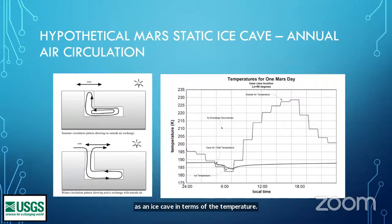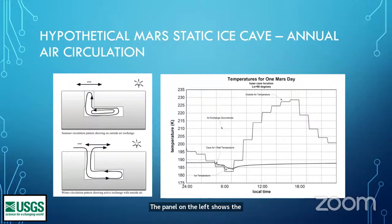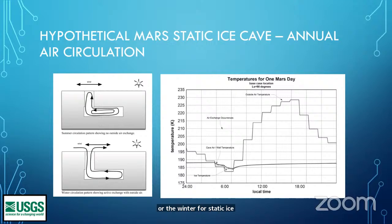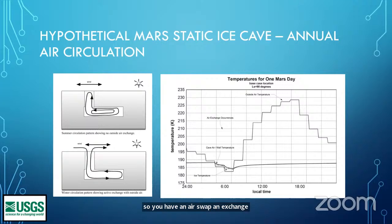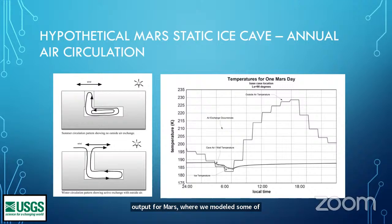Here's an example of what we call a static ice cave. The panel on the left shows the differences in air circulation between the outside and inside of the cave depending on summer or winter. In summer, the outside air is warmer than the slug of air in the cave, so you don't have any air exchanges. In winter, however, you can get very cold air outside — so cold it's even colder than that slug of air in the cave — and so you have an air swap or exchange. The panel on the right shows model output for Mars where we modeled static ice caves, showing that right before the sun comes up it's so cold outside that some air is colder than the air in the cave — that's when you get those air swap events.